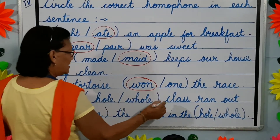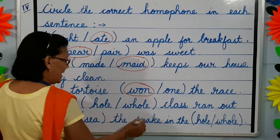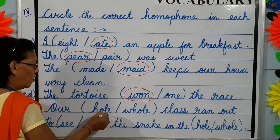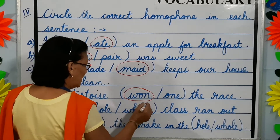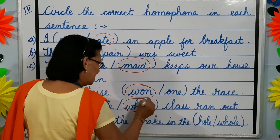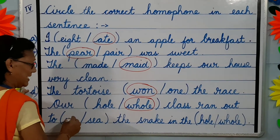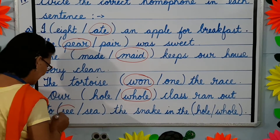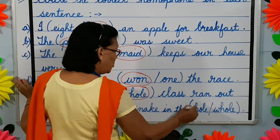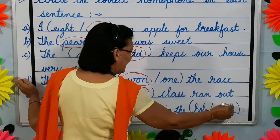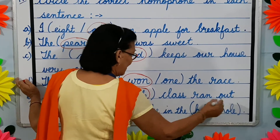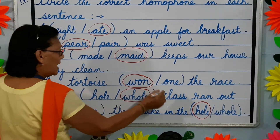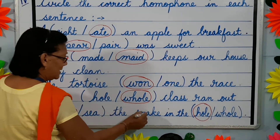Our whole class ran out to see the snake in the hole. H-O-L-E: hole is a hole in the ground or in the wall. W-H-O-L-E: whole means the full class. S-E-E: see is to see something. S-E-A: sea is a water body. So: our whole class ran out to see the snake in the hole.